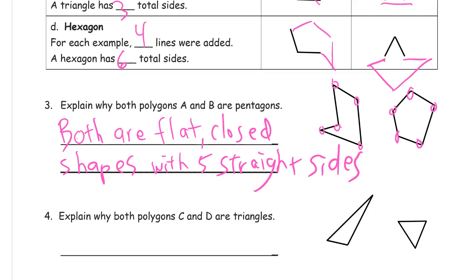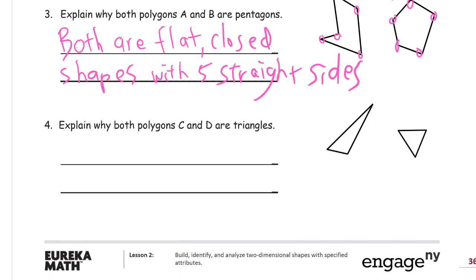Really, you just have to say they both have five sides, or they both have five angles. And that would probably be plenty. Explain why both polygons C and D are triangles. 1, 2, 3. 1, 2, 3. Now, it says right here, okay, it's given to you that they're polygons. So you really don't have to say that they're flat and closed and the sides are straight, because all polygons have to have that. So it's given to you that they're polygons. So you really don't have to write that. So I'm just going to say they both have three angles. Okay. Thank you.